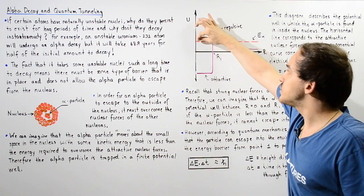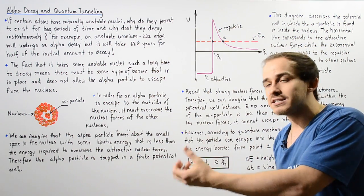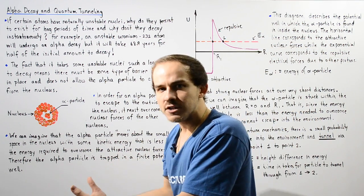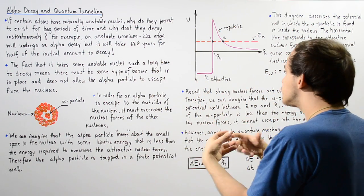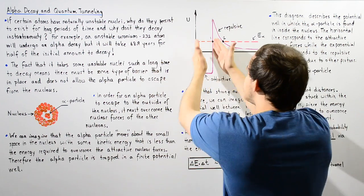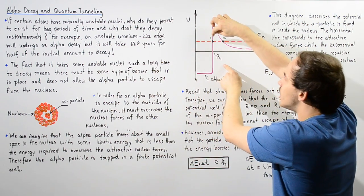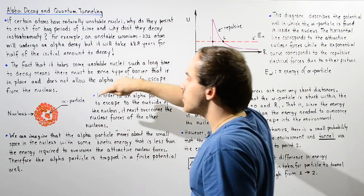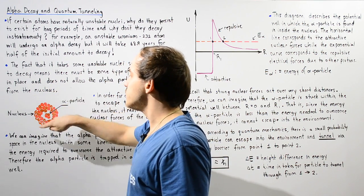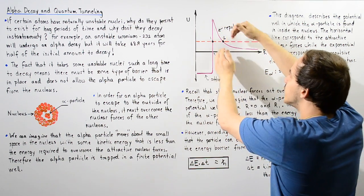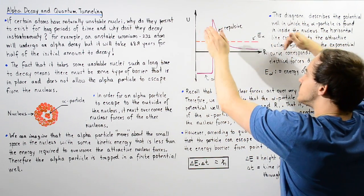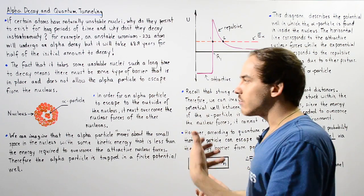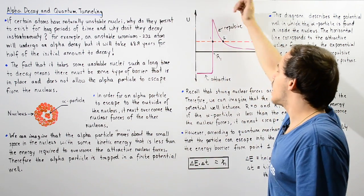If the alpha particle somehow gains enough energy and overcomes this barrier, the strong and weak nuclear forces decrease dramatically because they only act over very short distances — they only exist within this inner region. Once the alpha particle escapes this barrier, the only forces it will feel are the electric repulsive forces from the protons in the nucleus, causing it to repel outward. The question is: how exactly does the alpha particle gain enough energy to overcome this barrier?